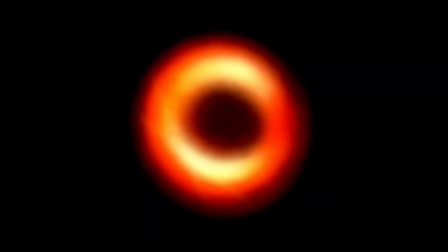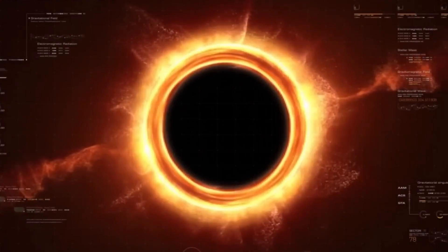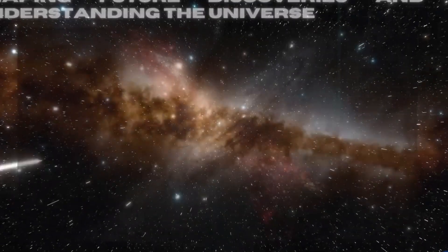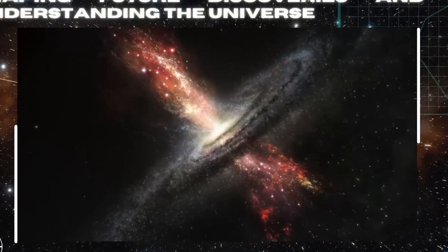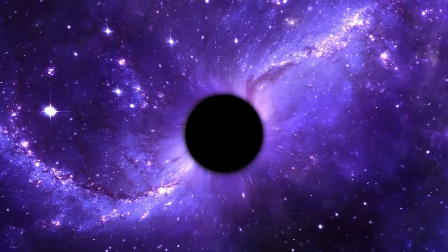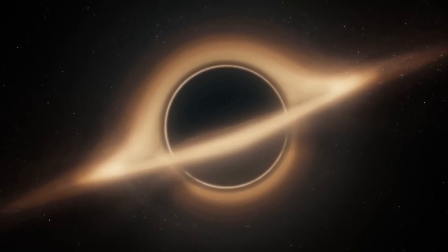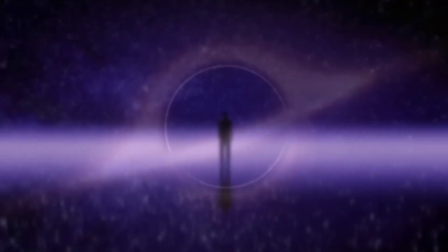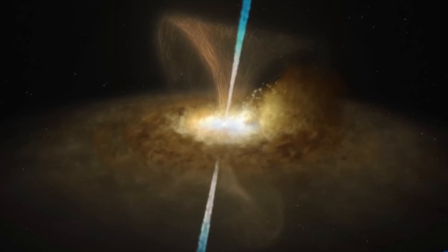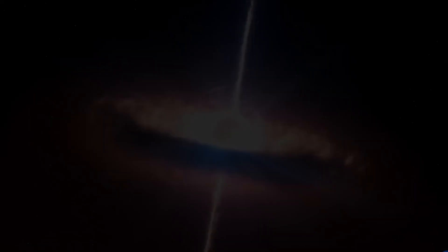For decades, the Unified Model of AGN has posited that the differences between Type 1 and Type 2 AGN are primarily due to the orientation of the dusty torus surrounding the supermassive black hole. Type 1 AGN are viewed more face-on, revealing broad emission lines and visible accretion disks, while Type 2 AGN are seen edge-on, with the torus obscuring much of the activity.